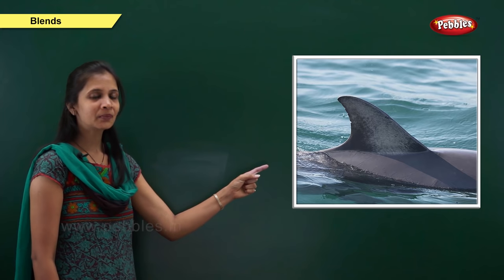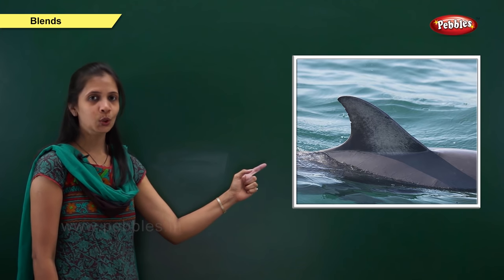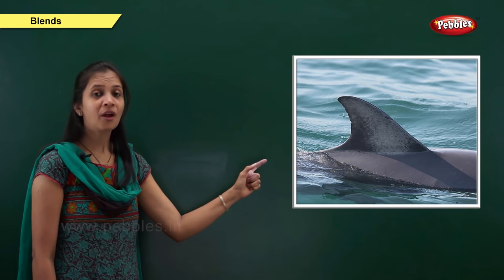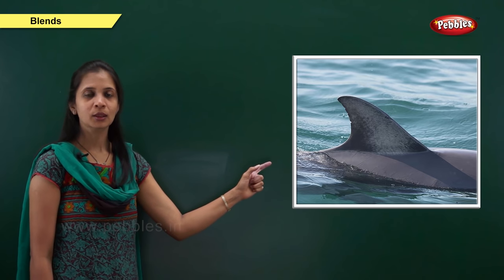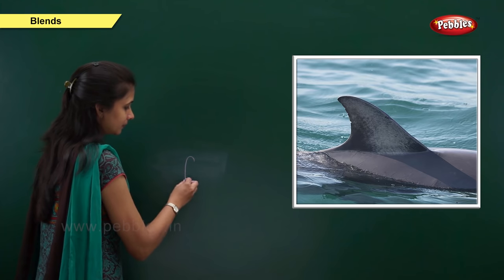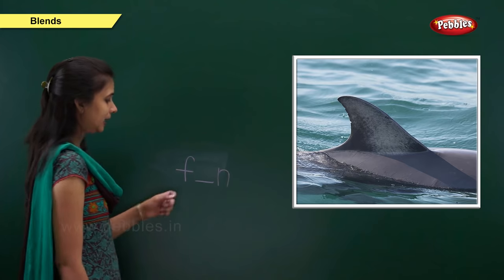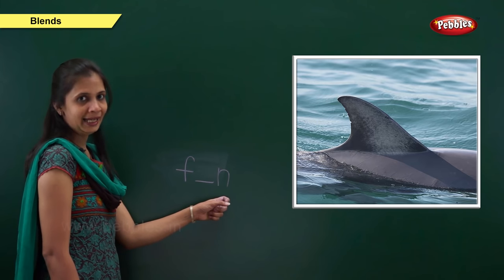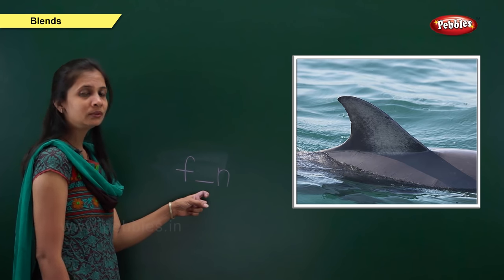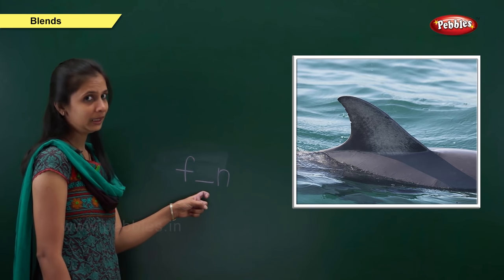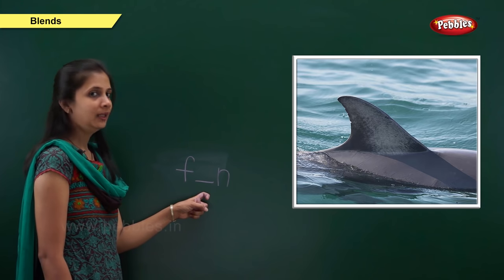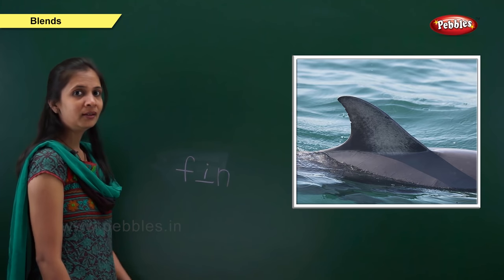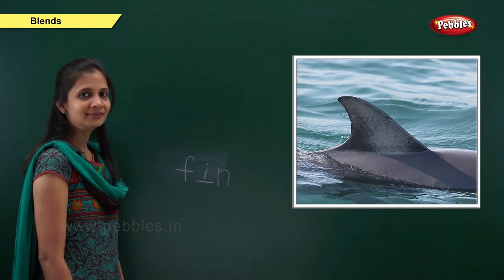Next one. Which picture is this? It is fin. What is the sound of this word? It is f, e, n. When the beginning sound is 'f', the letter is f. When the ending sound is 'n', the letter is n. What about the middle sound? It is 'e'. The letter is i. The vowel i. So: f, i, n — fin.